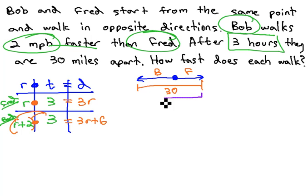If their total distance is 30, that means we are adding Bob and Fred's distances together. If we add them together, we get a total distance of 30.